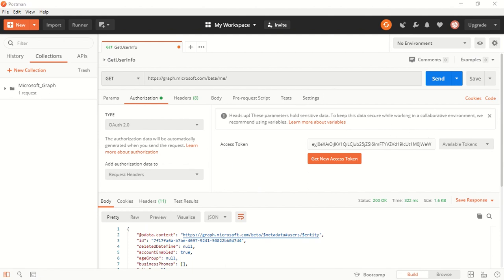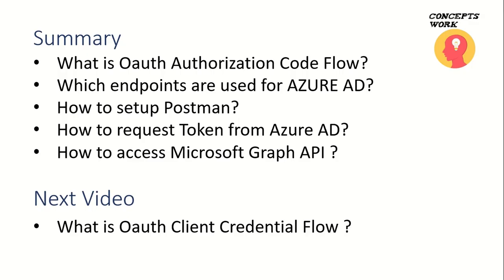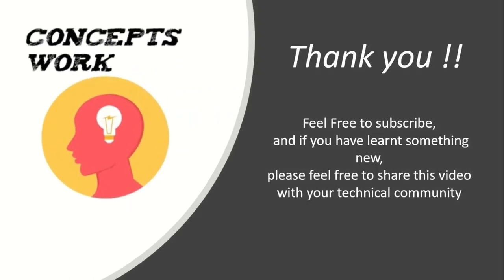So this is how you can use the Postman app to test OAuth 2.0 authorization code grant flow. To summarize: we discussed what OAuth authorization code flow is, the different endpoints used, how to set up Postman to request an access token, and how to use it with Microsoft Graph API. In the next video we'll talk about OAuth client credential flow. If you've learned something new, please subscribe and share this channel with your technical community. Thank you so much.